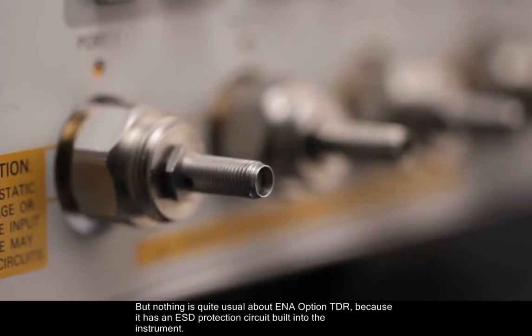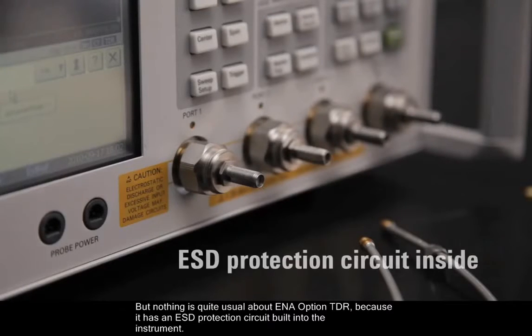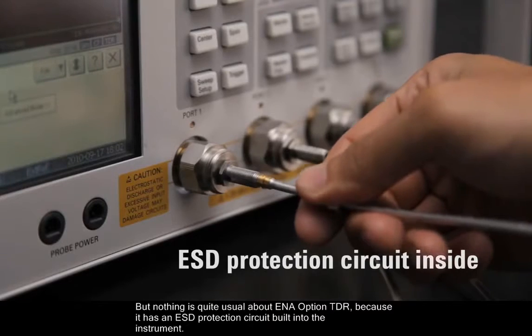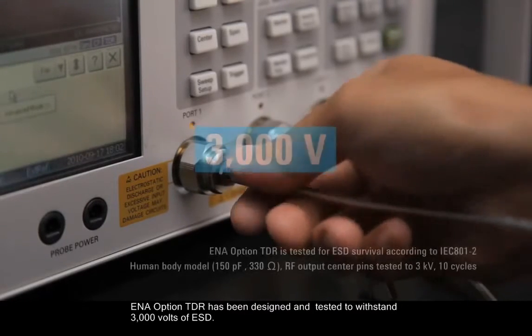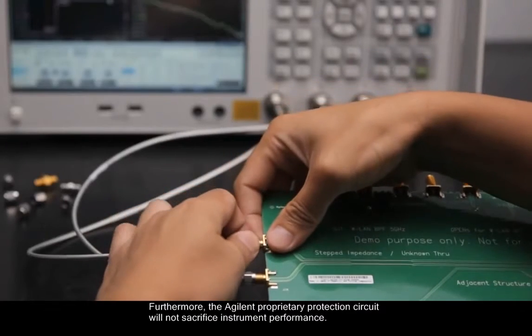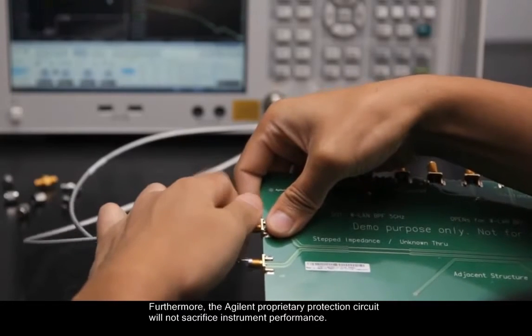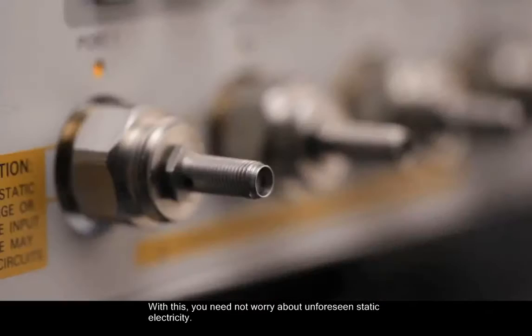But nothing is quite usual about ENA Option TDR because it has an ESD protection circuit built into the instrument. ENA Option TDR has been designed and tested to withstand 3000 volts of ESD. Furthermore, the agile and proprietary protection circuit will not sacrifice instrument performance. With this, you need not worry about unforeseen static electricity.